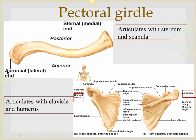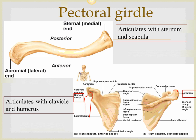The clavicle articulates medially with the sternum at the sternoclavicular joint, and laterally with the acromion of the scapula at the acromioclavicular joint. The scapula has a glenoid cavity where it articulates with the humerus to form the shoulder joint, and an acromial end where it articulates with the clavicle.